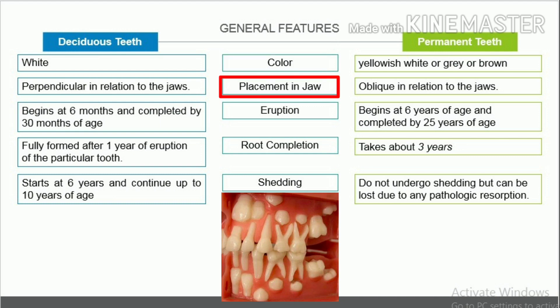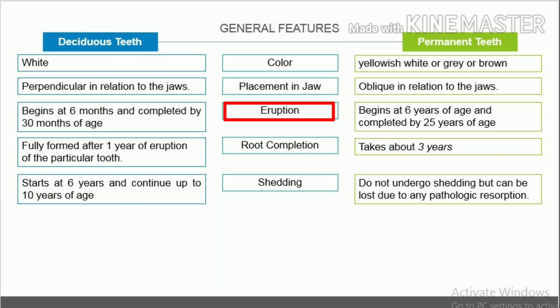Placement in jaw. Deciduous teeth are placed perpendicular in relation to the jaws. Permanent teeth are placed oblique in relation to the jaws. Eruption. Deciduous teeth: eruption begins at 6 months after birth and is completed by 30 months of age. Permanent teeth: eruption starts at 6 years after birth and is completed by 25 years of age.